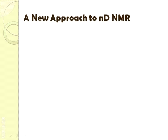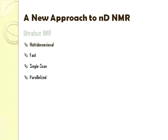In this video, we will be reviewing a new method for obtaining NMR spectra called Ultrafast NMR. Ultrafast NMR is a multi-dimensional, fast, single scan technique which operates by parallelizing the acquisition process. Simply put, this means that Ultrafast NMR can be used to obtain 2D, 3D, and ND NMR spectra in under a second and within a single scan.